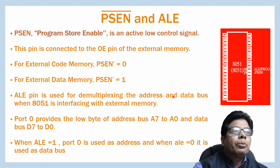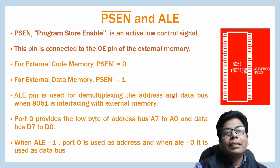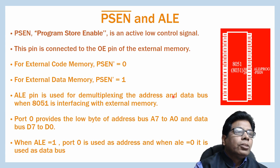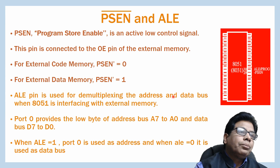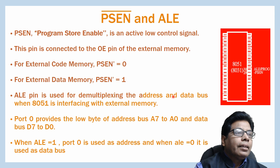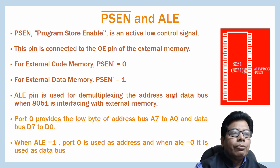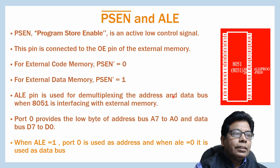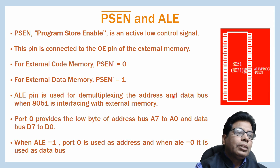The PSEN (program store enable) is an active low control signal. PSEN is connected to the OE (output enable) pin of the external memory. For external code memory, PSEN bar equals 0; for external data memory, PSEN equals 1. The ALE pin is used for demultiplexing the address and data bus when the 8051 interfaces with external memory. Port 0 provides the low byte of the address bus (A7 to A0) and data bus (D7 to D0). When ALE is 1, port 0 is used as address; when ALE is 0, it is used as data bus.